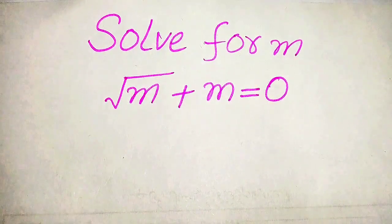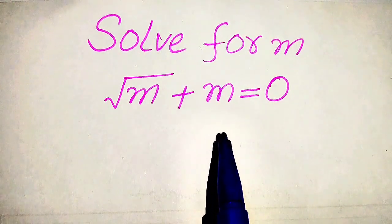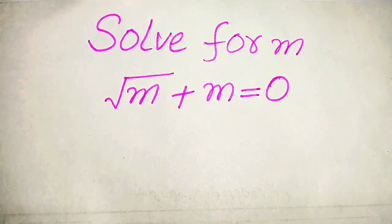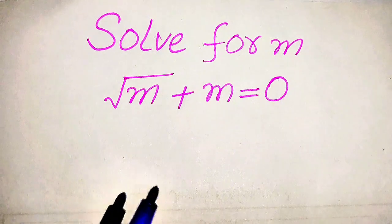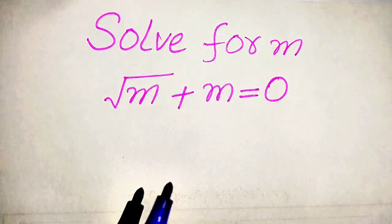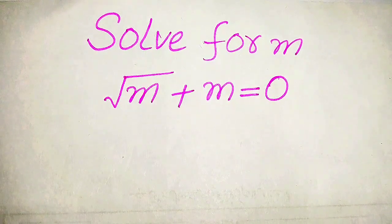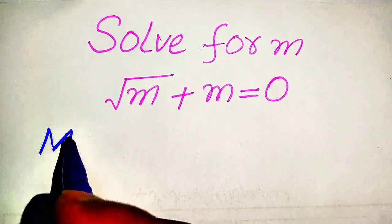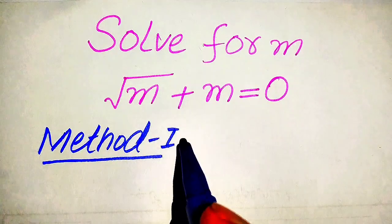Hello everyone. How to solve this problem for the values of m if we have square root of m plus m equals 0. We solve this problem for all the values of m, and at the last we check which of these values satisfy the equation, which are solutions, and which are extraneous roots. We explain the term extraneous root at the end. We solve this problem using two methods.